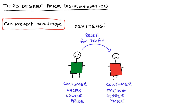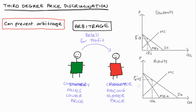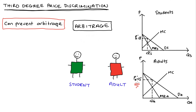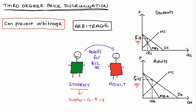This is called arbitrage, and that's our third point — the firm has to be able to prevent arbitrage. In our example, the cinema might sell a standard adult ticket at $15, but students can buy a discounted ticket at $8. What's to stop a student buying a ticket for $8 and reselling it to a non-student adult for, say, $12? The student would make $4 of surplus through this trade, and the adult would get a surplus of $3 by paying $12 instead of $15. If arbitrage is possible, third-degree price discrimination will not work because consumers will have an incentive to circumvent the higher price and no one will end up paying it.